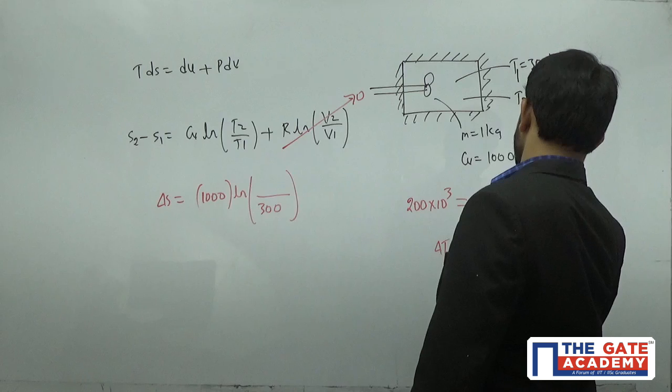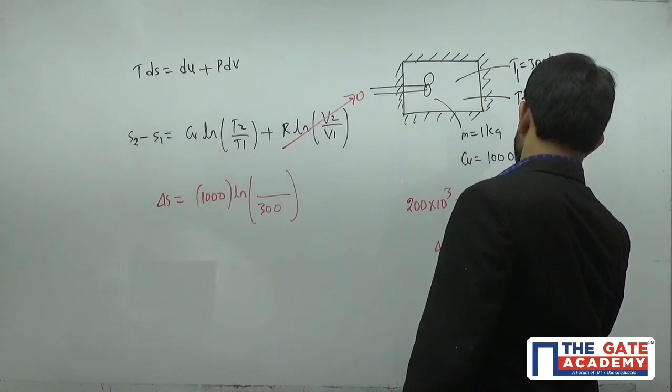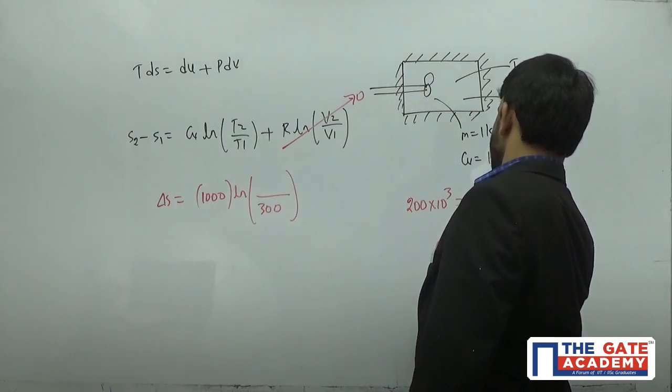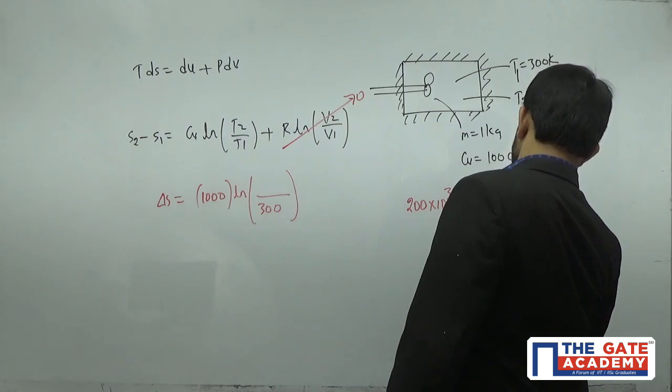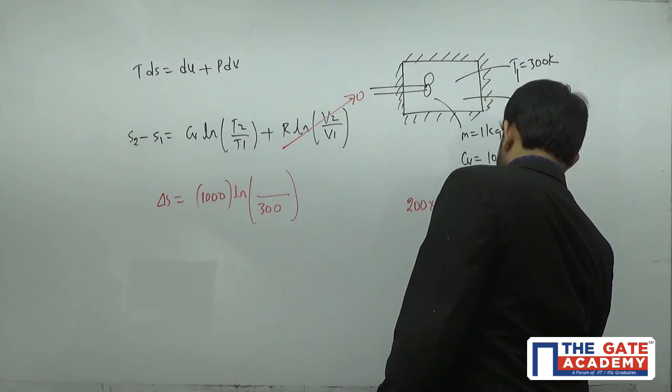So I can say it is MCV delta T. Delta T equals 200 times 10^3 divided by mass, which is given as 1 kg, and CV is given as 1000. So delta T is 200. Delta T is T2 minus T1, where T1 is 300, equals 200. So the final temperature of the gas after doing work will be 500 Kelvin.